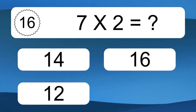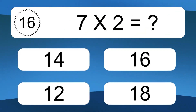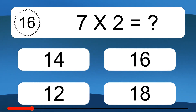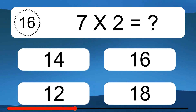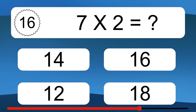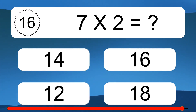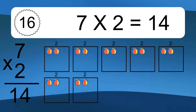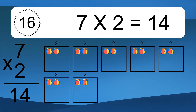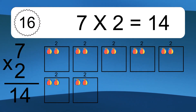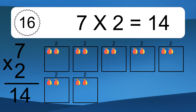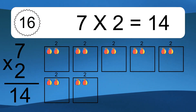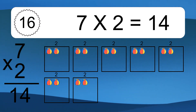7 times 2 equals what? 7 times 2 equals 14. We have 7 boxes and each box has 2 colorful balls inside. If you count all the balls in all the boxes together, you will have 7 times 2 balls. This equals 14 balls.